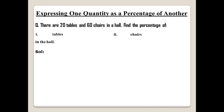For the solution, first we find the total number of items in the hall: 20 tables plus 60 chairs equals 80 items total. Coming to the first part — tables: the percentage of tables is 20 over 80 multiplied by 100 percent. Cancel the zeros of 20 and 80, then cancel 2 and 8 by dividing by 2, giving 1 and 4. Then cancel 4 with 100, giving 25. The answer is 25 percent.